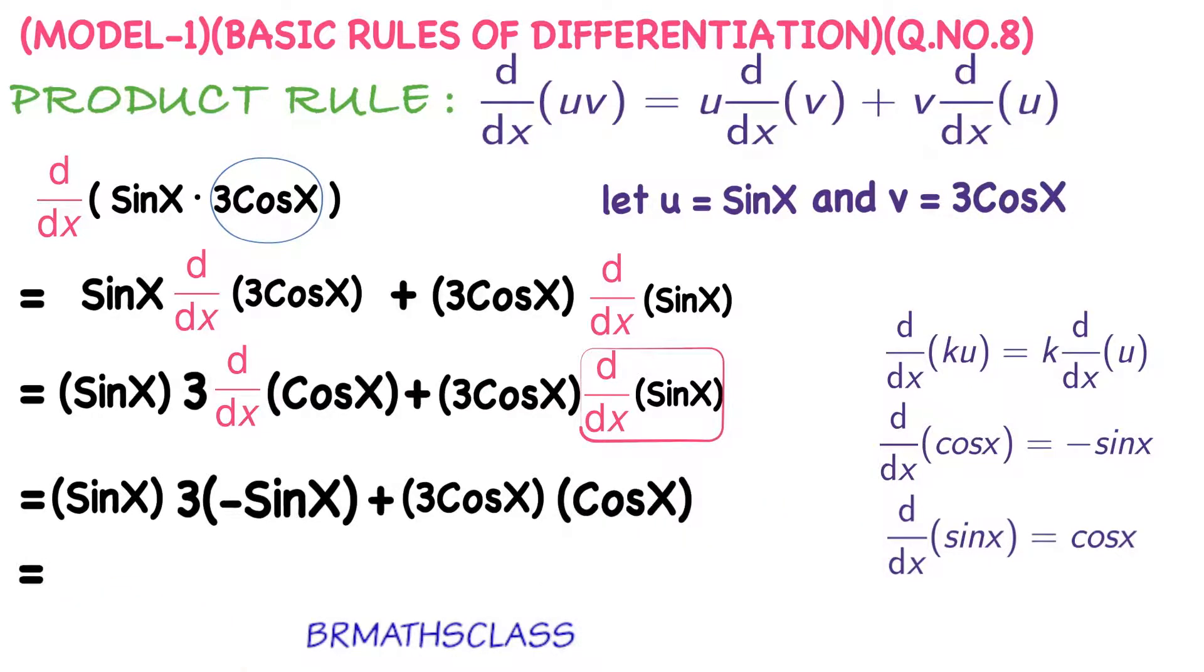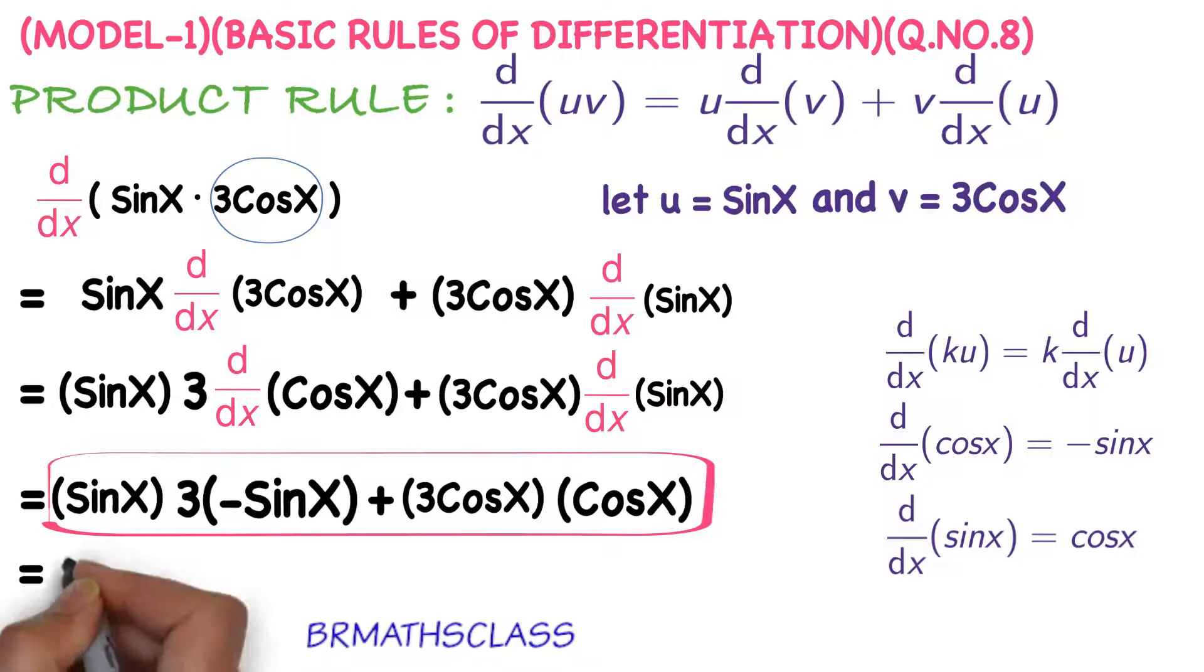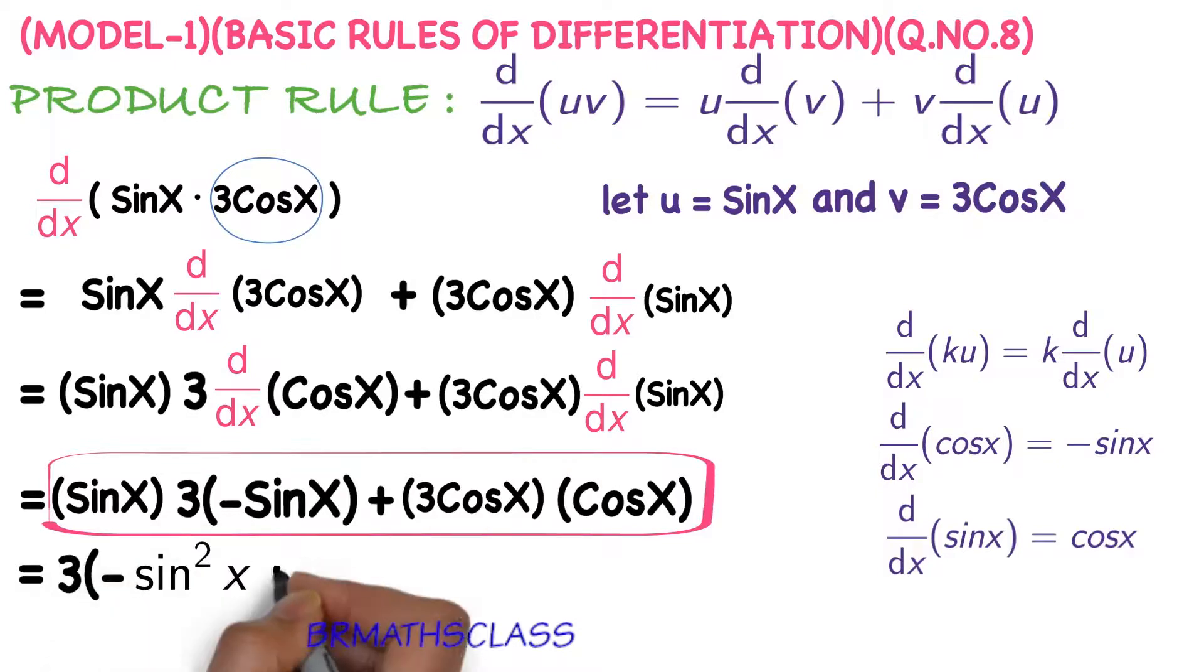In the first term we can take 3, in the second term we can take 3 common. So you take 3 common and multiply the remaining terms: cos x into cos x minus sin x into sin x. That equals 3 into...